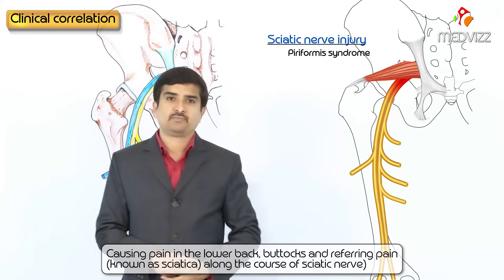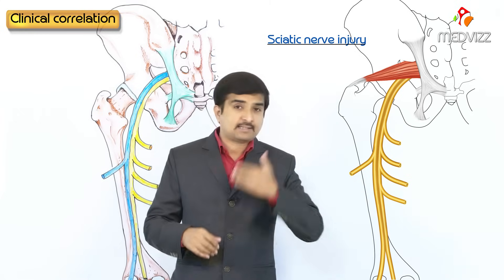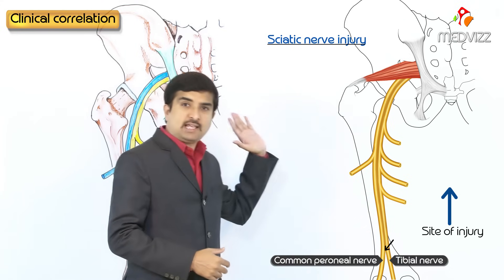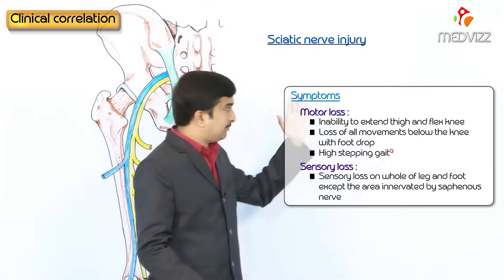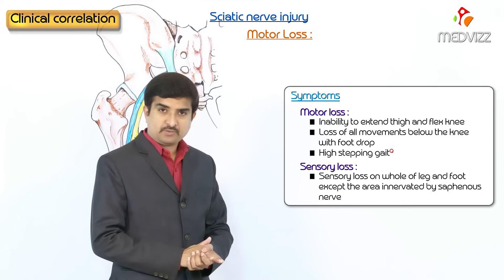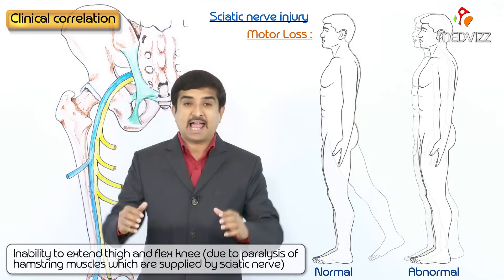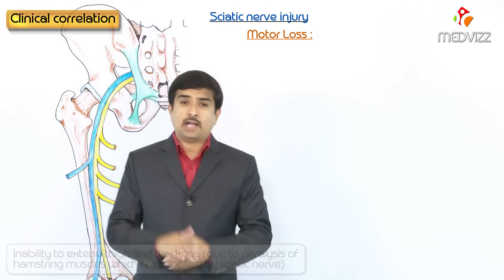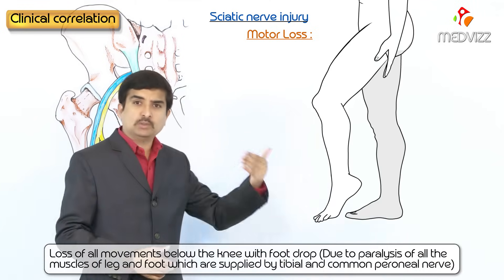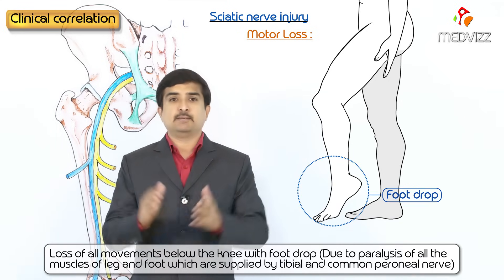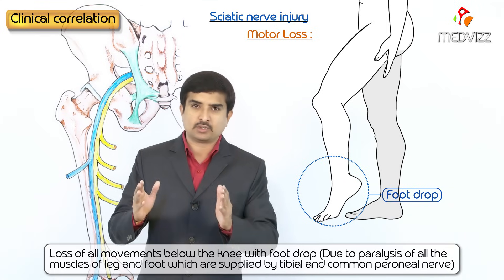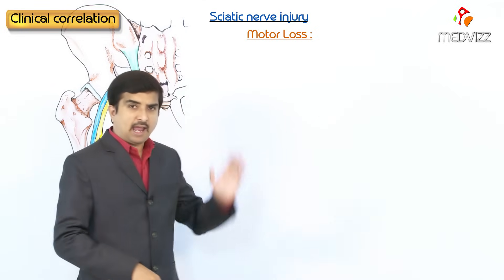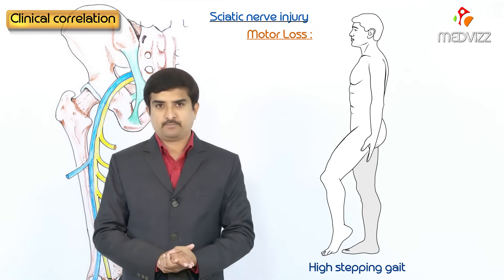When the site of injury is before the sciatic nerve divides into its two terminal branches, both the tibial and common peroneal nerves are affected. Motor loss includes: inability to extend the thigh and flex the knee, mainly due to paralysis of the hamstring muscles supplied by the sciatic nerve. There is also loss of movements below the knee. Foot drop is seen due to paralysis of all muscles of the leg and foot supplied by the tibial and common peroneal nerves, and a high-stepping gait is observed.